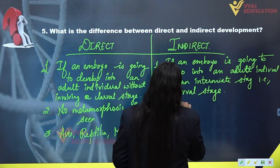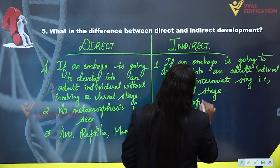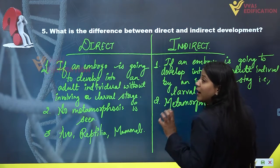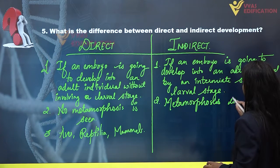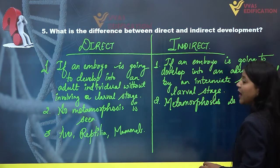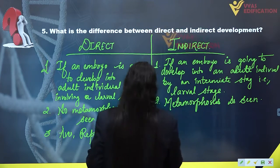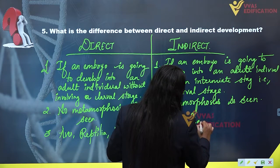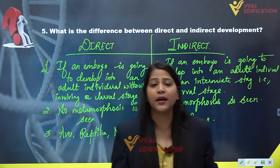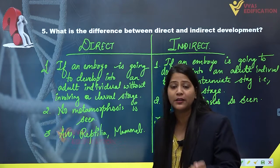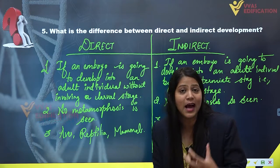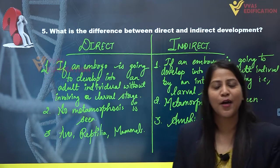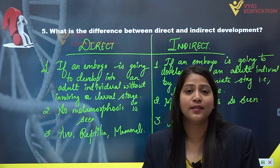Metamorphosis is a phenomenon through which the larva is going to convert into an adult individual, and metamorphosis is seen in animals of indirect development. Examples of indirect development include amphibians. For direct development, we have examples such as reptilia and mammals. This is the complete solution of question number five — I hope you understand the difference between indirect and direct development.